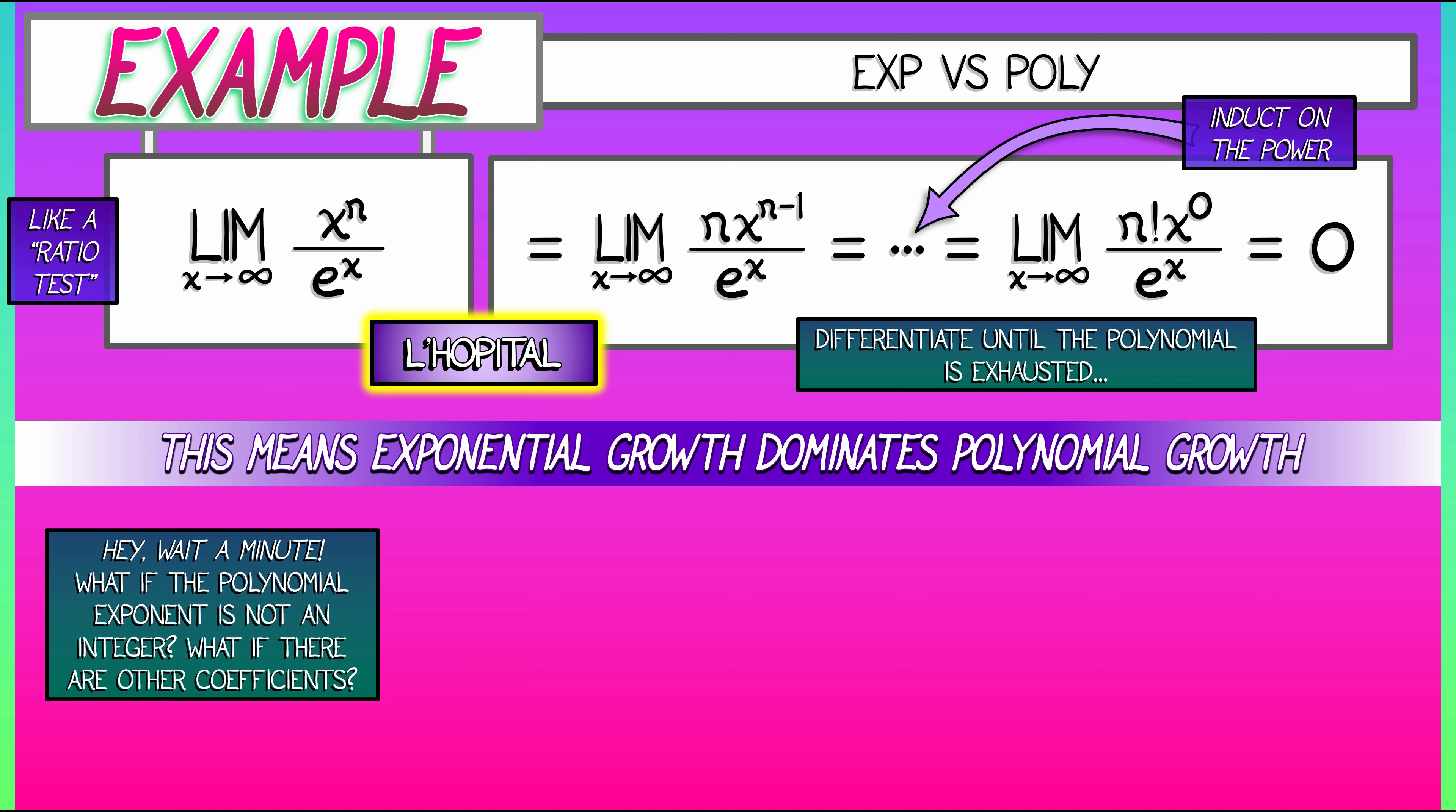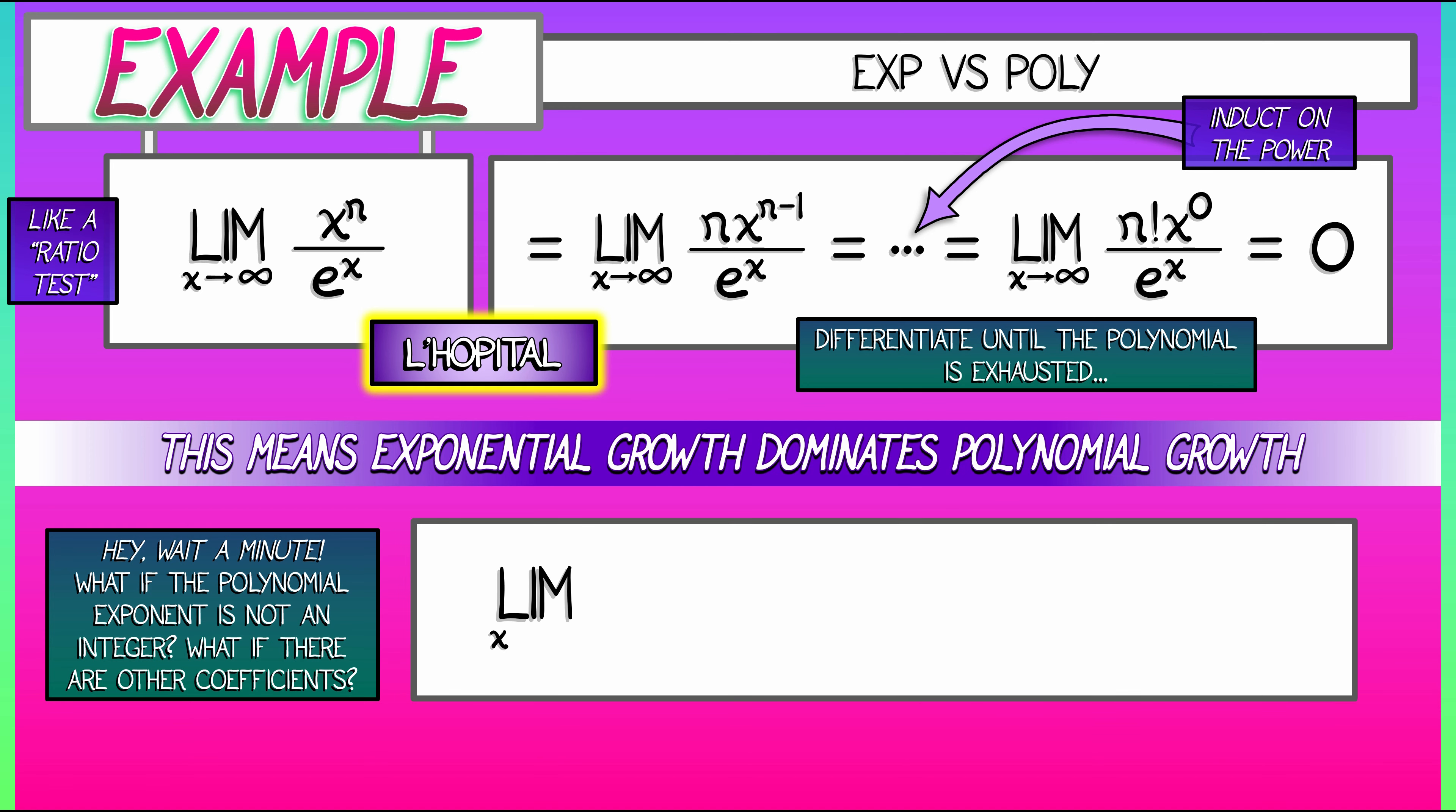Look at the limit as x goes to infinity of, in the numerator, some constant times x to the alpha divided by some other constant times e to the beta x. And here, let's assume that those exponents, those constants, alpha and beta, are positive numbers, but not necessarily integers.